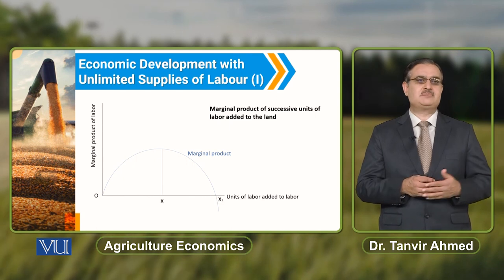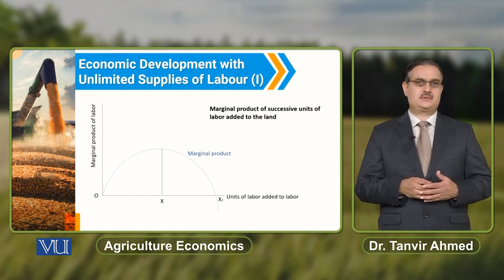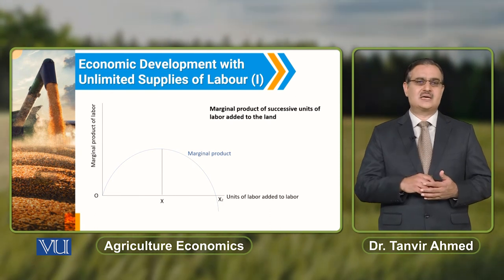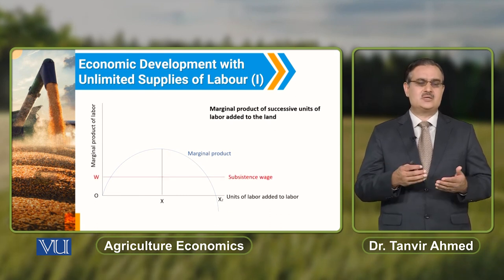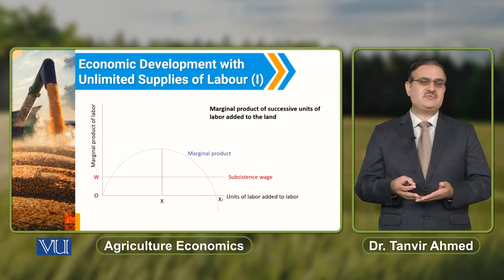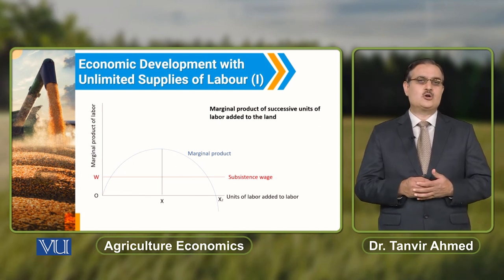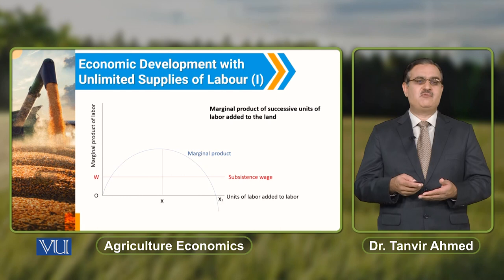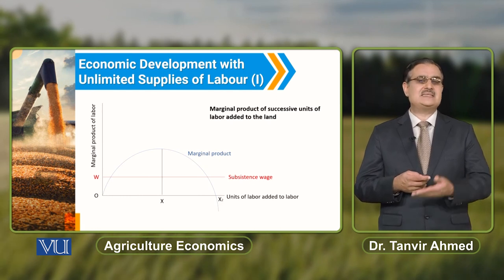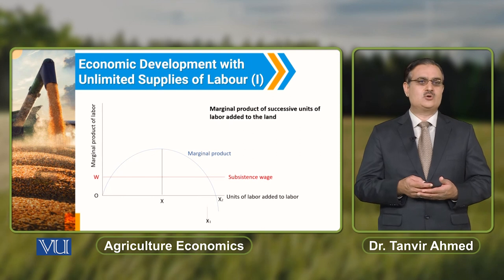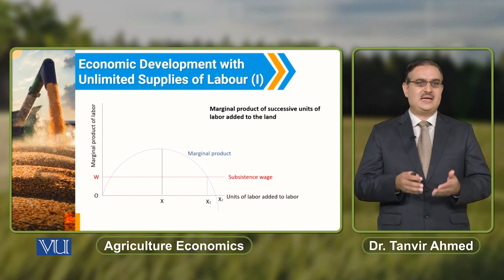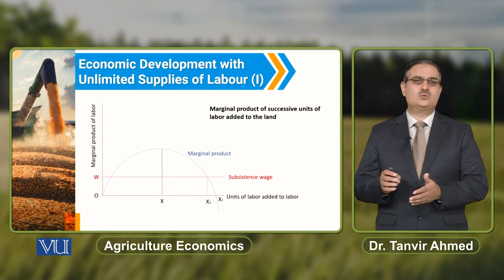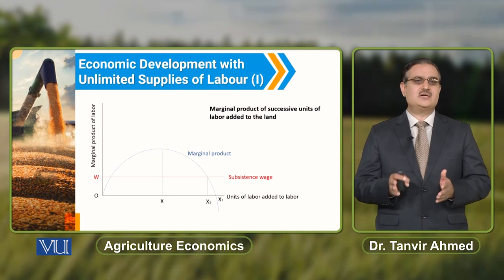On the vertical axis we are reporting the marginal product of labour. The curve drawn here reports the marginal product. Aur yeh jo horizontal line hai, this horizontal line reports the subsistence wage or institutional wage that prevails in the economy. Aur aapke paas jo marginal product hai, that marginal product is maximum when x units of labour is added. Marginal product of labour becomes equal to subsistence wage against x1 units of labour.